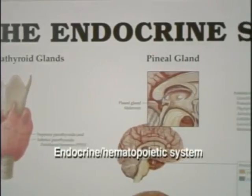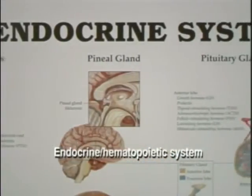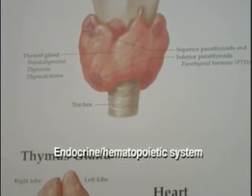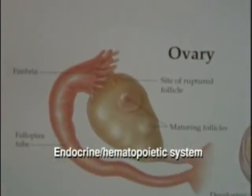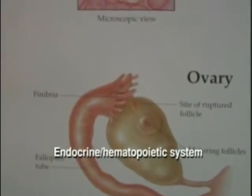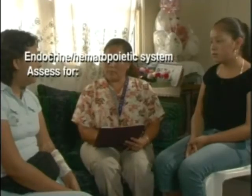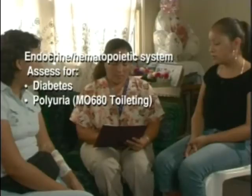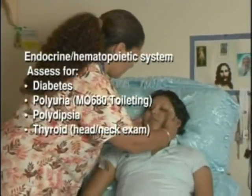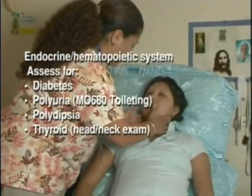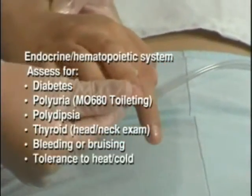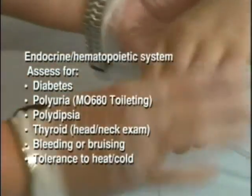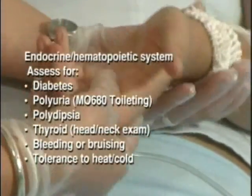The endocrine hematopoietic system is comprised of the organs that produce hormones that regulate many functions of the body to preserve homeostasis. Disorders can cause many of the diseases for which patients are treated at home, such as diabetes. Assess for diabetes, polyuria, and polydipsia. Thyroid disorders can be assessed by palpation of the thyroid during the head-neck exam. Bleeding or bruising and tolerance to heat or cold may be indicators of disorders in this system. The physician may order certain blood tests to validate findings.